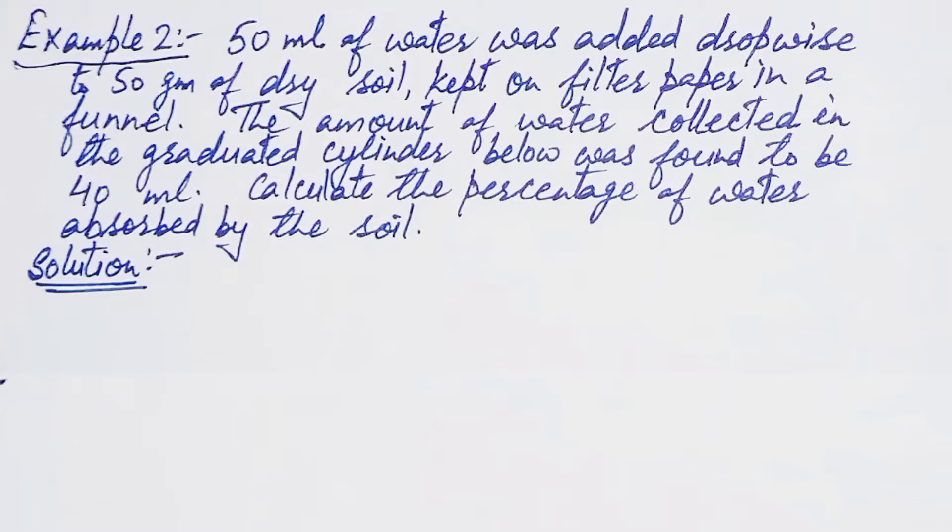50 ml of water was added drop wise to 50 gram of dry soil kept on filter paper in a funnel. The amount of water collected in the graduated cylinder below was found to be 40 ml. We have to calculate the percentage of water absorbed by the soil.